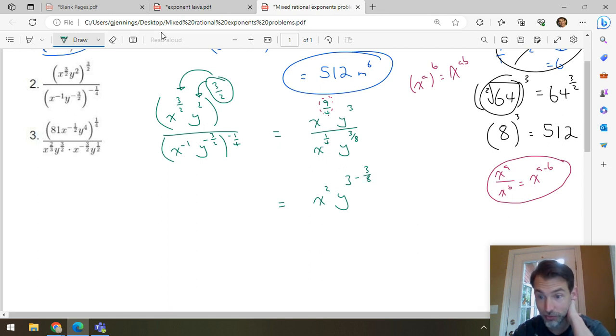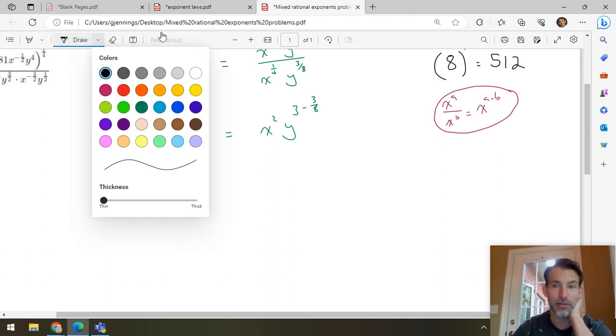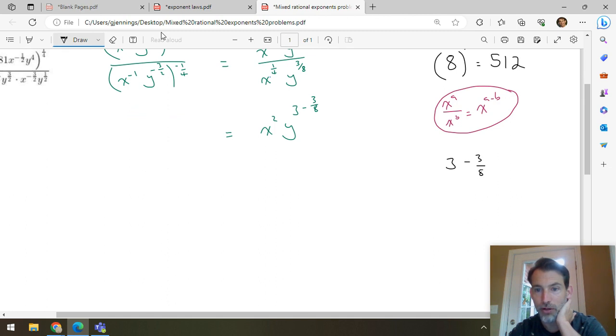Now, that's the whole expression. I just need to evaluate 3 minus 3 eighths. And it's 2 and 5 eighths is 3 minus 3 eighths. But I know that some of you don't believe me or you're reaching for a calculator, which is the wrong move. You don't need a calculator here. 3 minus 3 over 8. I need a common denominator. So, multiply this by 8 over 8. This is equal to 24 minus 3 over 8. This is 21 over 8. And what was I saying? It was 2 and 5 eighths. Well, 2 would be 16 eighths. So, that is 2 and 5 eighths.